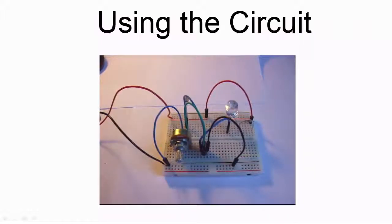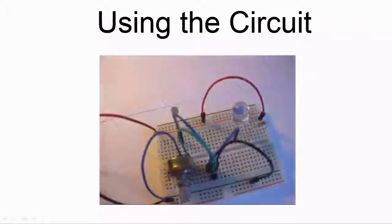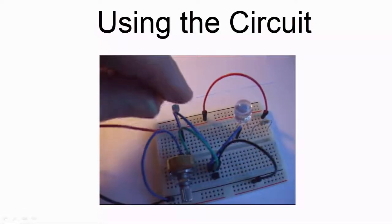If it doesn't, turn the knob on the variable resistor to reduce the resistance. If you don't know which way to turn it, try both directions.